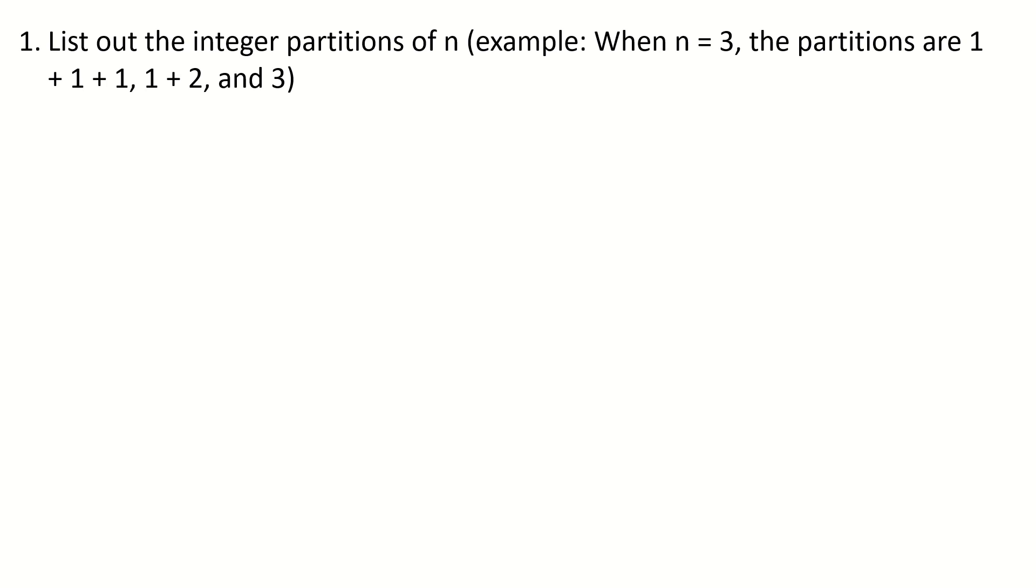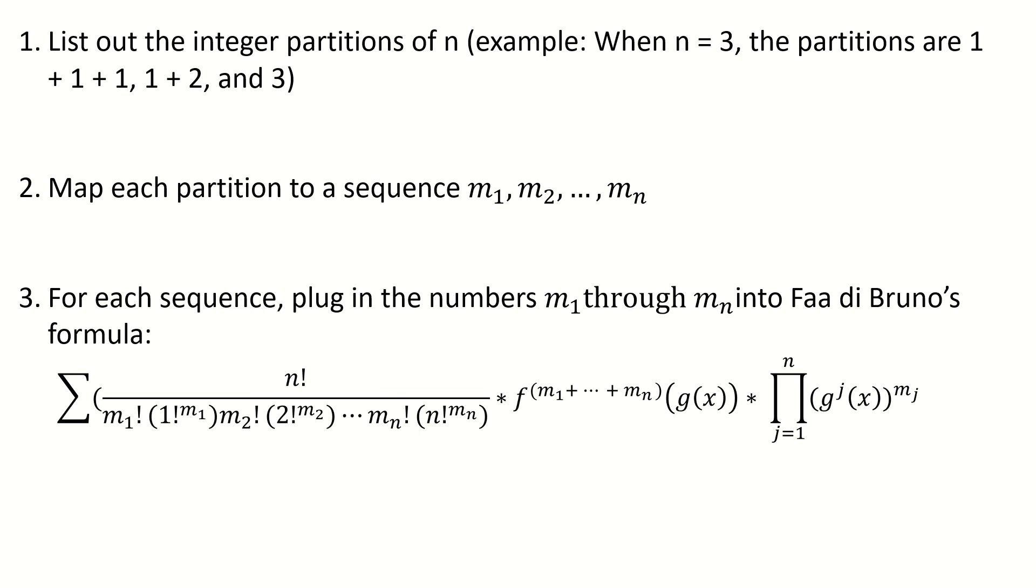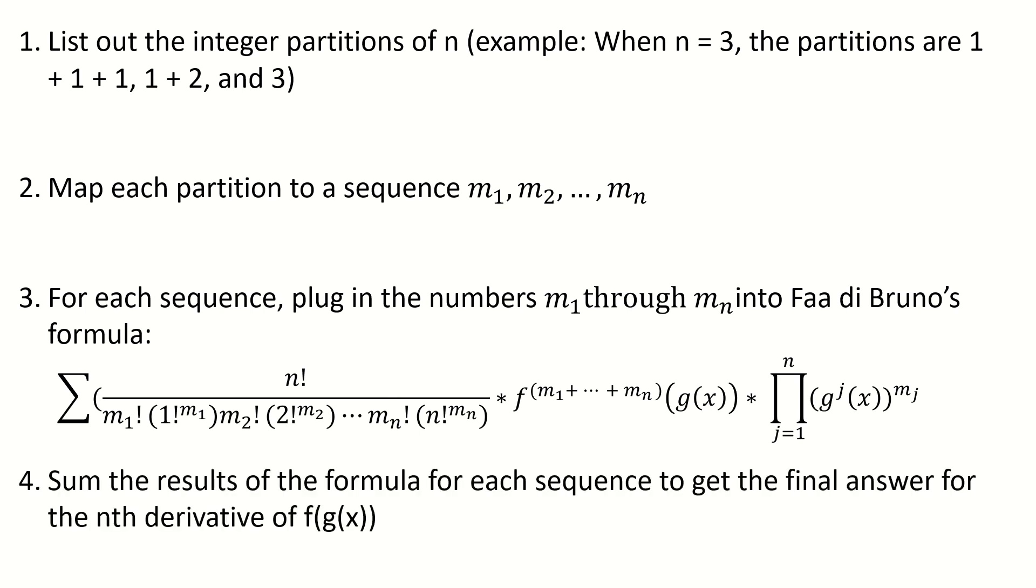So to recap, the first thing to do when you're working with Faa di Bruno's formula to find an nth derivative is to list out the integer partitions of n and then map each one to its sequence of numbers m1 through mn that uniquely describes it, creating a set of sequences of numbers m1 through mn. Then the next thing to do is plug in the numbers m1 through mn of each sequence into the formula, and finally sum the results for each sequence to find the nth derivative.